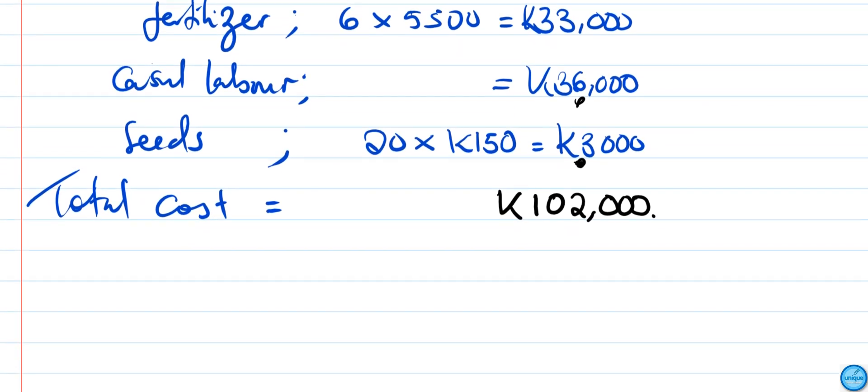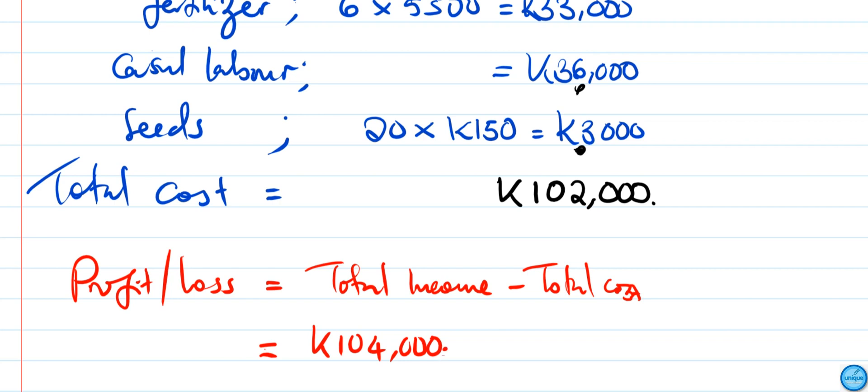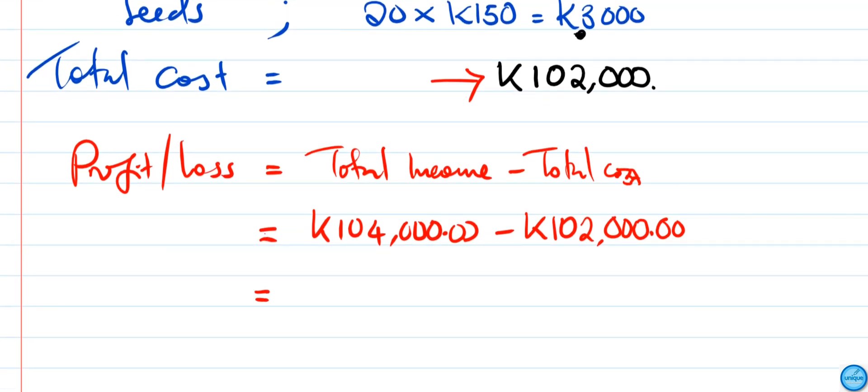Profit or loss is equal to total income minus total cost. Total income is K104,000, then you subtract K102,000. So the difference between these two, the profit, is K2,000.